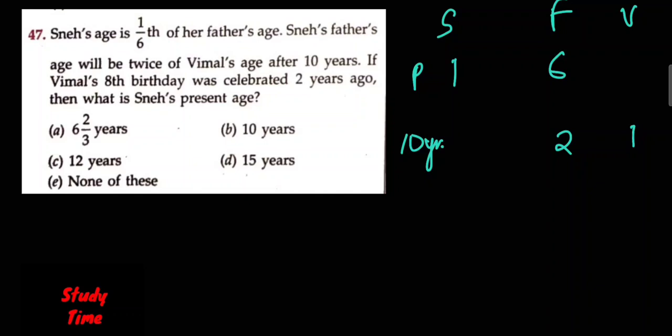So we consider present age. Father's age will be twice Vimal's age after 10 years. That means Father's current age equals 2 times (10 plus 10), which equals 40 years. So what is Sneha's age? How much will it be?